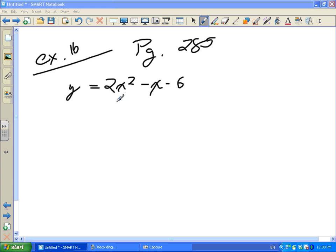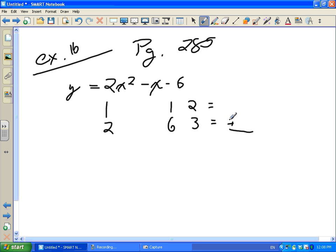So in order to factor this, I find the factors of the first two terms and the factor of the last term C. So 1 and 6, 2 and 3. We know that their products are going to have to add to what our middle number is, which is negative 1.